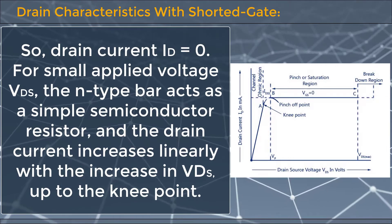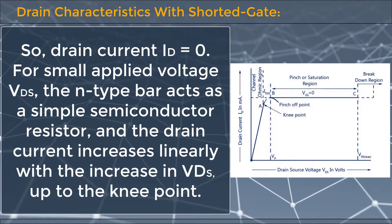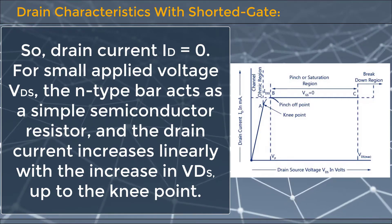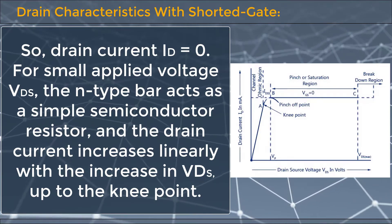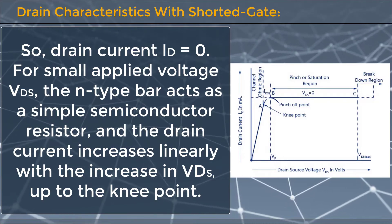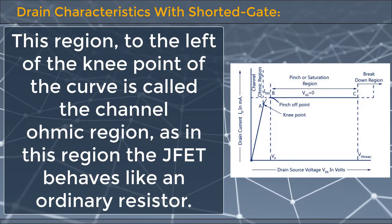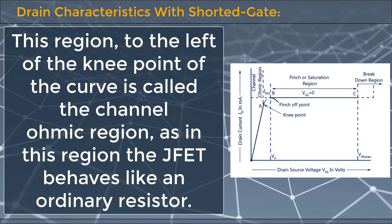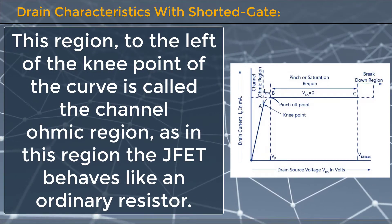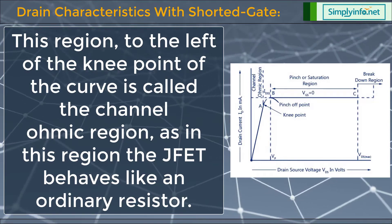For small applied voltage VDS, the n-type bar acts as a simple semiconductor resistor and the drain current increases linearly with the increase in VDS up to the knee point. This region to the left of the knee point is called the channel ohmic region, as the JFET behaves like an ordinary resistor.